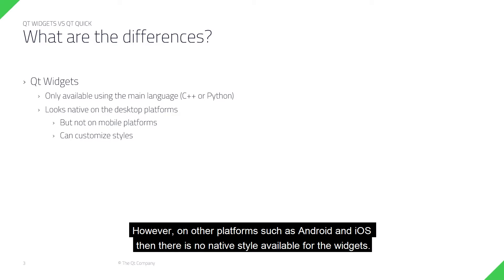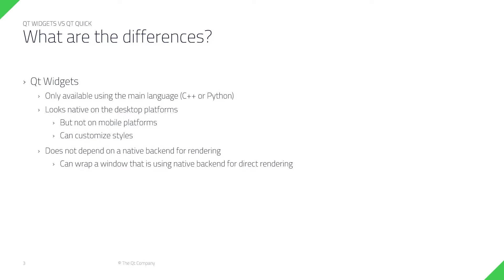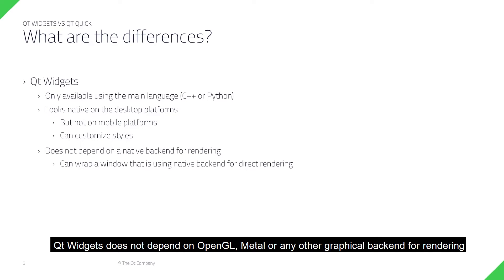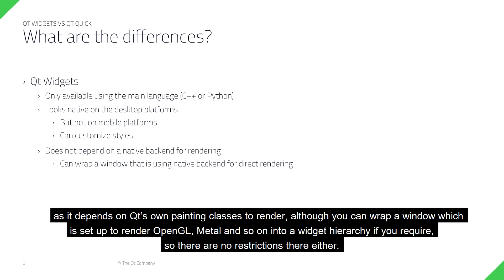However, on other platforms such as Android and iOS, there is no native style available for the widgets. Qt Widgets does not depend on OpenGL, Metal, or any other graphical backend for rendering, as it depends on Qt's own painting classes to render. Although you can wrap a window set up to render OpenGL, Metal, and so on into a widget hierarchy if you require — there are no restrictions there either.